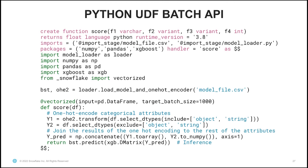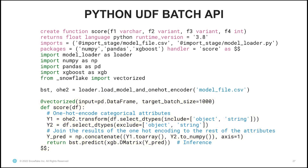Here's an example of a Python UDF defined using the batch API. I've defined the scoring function, taking a model file and model loader as input. The packages I'm using are NumPy, Pandas, and XGBoost, and the handler I'm going to use is score. I've specified the vectorized attribute and specified that I want to use a pandas DataFrame as the input representation. The target batch size is 1000, meaning I'm hoping to get 1000 rows of input in each DataFrame I receive. The scoring function one-hot encodes categorical attributes, joins the results to the rest of the input attributes, and then runs a prediction function on the entire batch of 1000 rows — which is much faster than processing a single row at a time. We've seen performance improvements of up to 100 times when using the batch API.